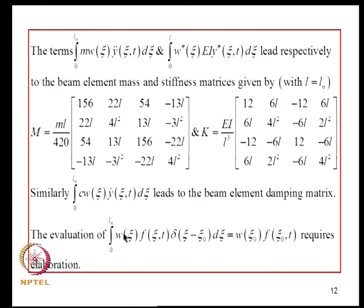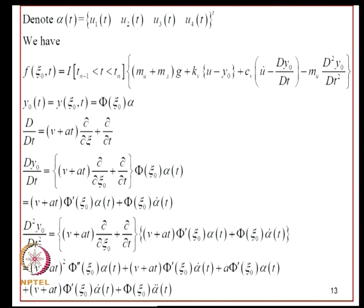Evaluating the wheel force term W·psi: since this involves a Dirac delta function, we can quickly carry out the integration. We use alpha to denote the nodal degrees of freedom [U1, U2, U3, U4]^T — a 4×1 vector. Then F is given using the definitions introduced. Y_0 itself is Y(XI_0, T) = Phi(XI_0)·alpha, which is a 1×4 times 4×1 scalar representation.